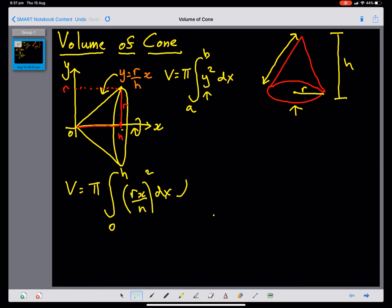I'm going to do this up here. Let's do some algebra first. Let's square each value. We've got R squared, x squared, all over h squared, dx.